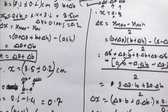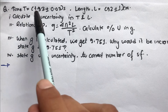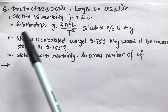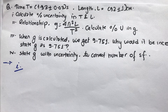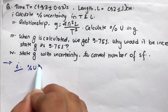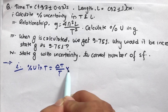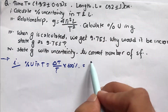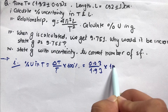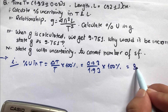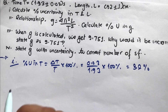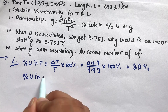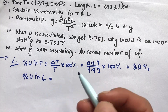Now let's look at a question. We are given a value for 10T with its uncertainty, and a length L with its uncertainty. I need to find the percentage uncertainty in T and L. For part one, percentage uncertainty in T equals delta T divided by T times 100%, which is 0.03 divided by 1.93 times 100%, giving approximately 3.2%.